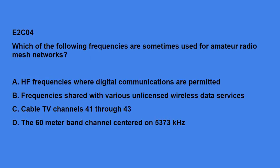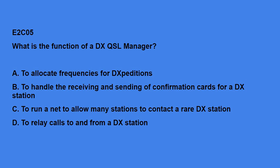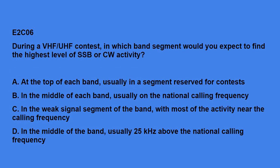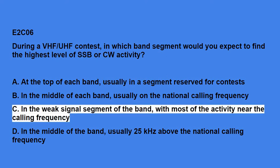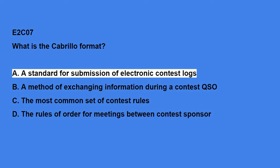E2C04: Which of the following frequencies are sometimes used for amateur radio mesh networks? Frequencies shared with various unlicensed wireless data services. E2C05: What is the function of a DX QSL manager? To handle the receiving and sending of confirmation cards for a DX station. E2C06: During a VHF-UHF contest, in which band segment would you expect to find the highest level of SSB or CW activity? In the weak signal segment of the band, with most of the activity near the calling frequency. E2C07: What is the Cabrillo format? A standard for submission of electronic contest logs.